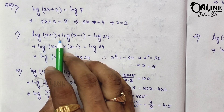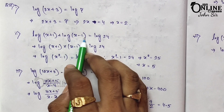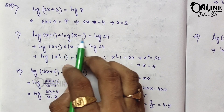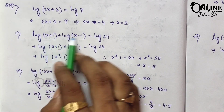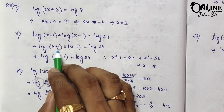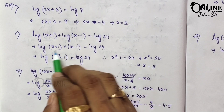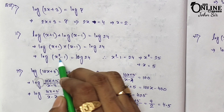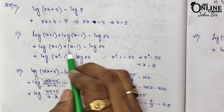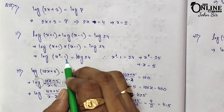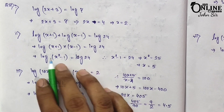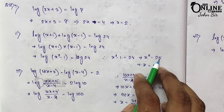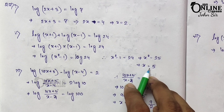Next: log(x + 1) + log(x − 1) = log 24. Using the formula log a + log b = log(ab), the left side becomes log[(x+1)(x−1)] = log 24. By the difference of squares formula, (x+1)(x−1) = x² − 1. Comparing both sides: x² − 1 = 24, so x² = 25 and x = 5.